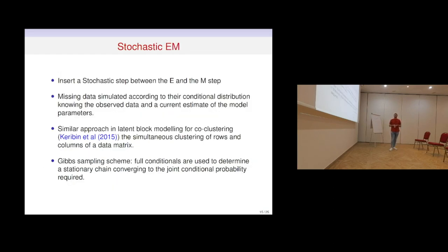The idea of the stochastic EM is to insert a stochastic step between the E-step and M-step, where the missing data are simulated by considering the joint conditional distributions given the observed data and the current parameter estimates. A similar approach is used in latent block models for co-clustering — the simultaneous clustering of rows and columns of a matrix. A Gibbs sampler works by considering full conditional distributions to generate a stationary Markov chain converging to the required joint conditional probability.